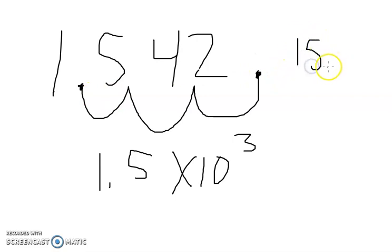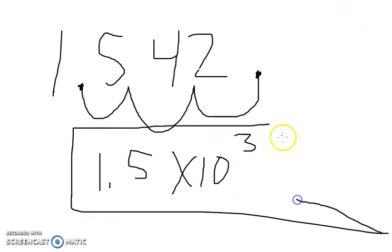The decimal just moves up one, because 1.5 times 10 is 15, and 15 divided by 10 is 1.5. So that's how I taught her significant figures.